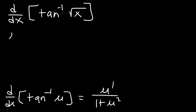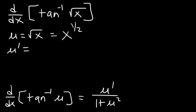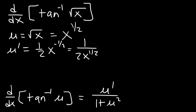We can see that u is the square root of x, which we can rewrite as x to the 1/2. Now u prime is the derivative of x to the 1/2. Using the power rule, it's 1/2 times x to the negative 1/2, which we can rewrite as 1 over 2x to the positive 1/2, or in radical form, 1 over 2 square root x.